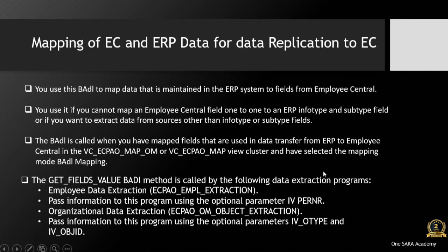Mapping of EC and ERP data for data replication to EC — you use this BAdI to map data that is maintained in the ERP system to fields from Employee Central. You use it if you cannot map an Employee Central field one-to-one to an ERP info type and sub-type field, or if you want to extract data from sources other than info type or sub-type fields. The BAdI is called when you have mapped fields in the VC8POW_MAP_OUM or VC8POW_MAP view cluster and have selected the mapping mode: BAdI mapping.